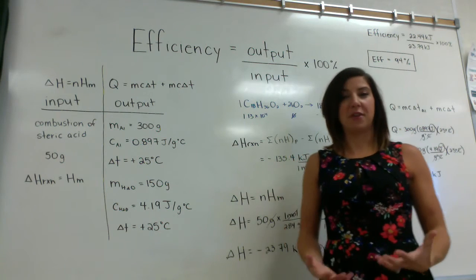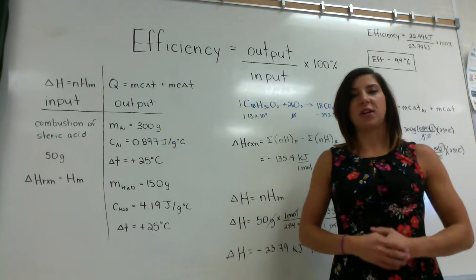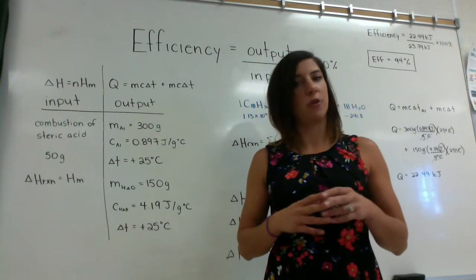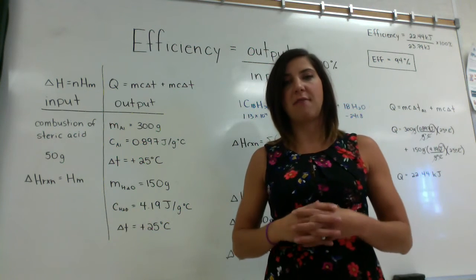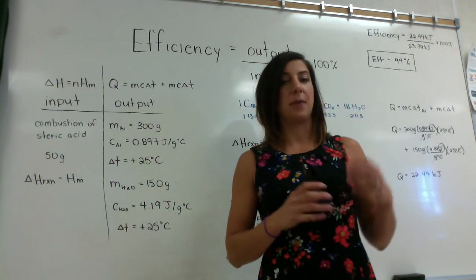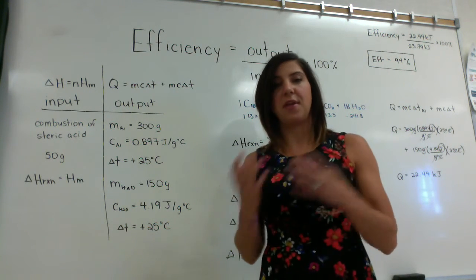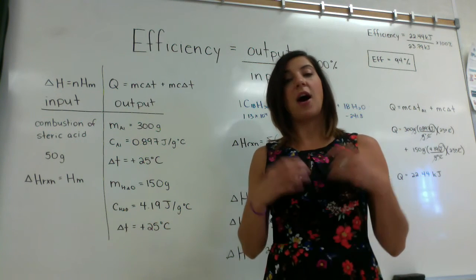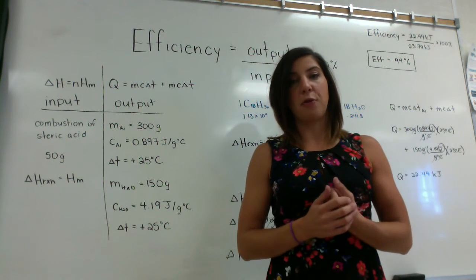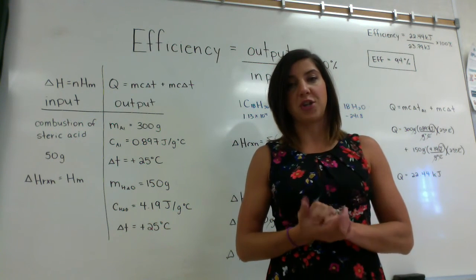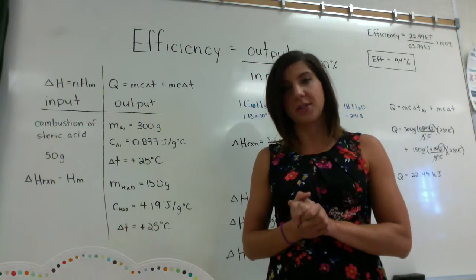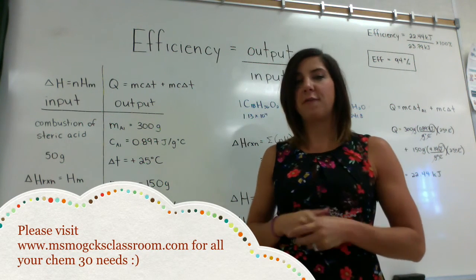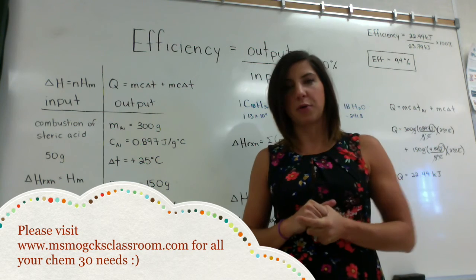That's all for today. We talked about simple calorimeters being everyday open-system calorimeters, having to take into account the heat capacity of different materials changing at different temperatures. We calculated the enthalpy of a reaction using an open-system calorimeter, and then we figured out the efficiency of our chemical reaction.